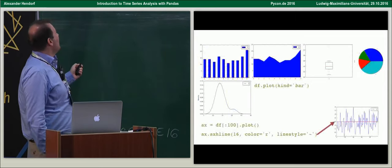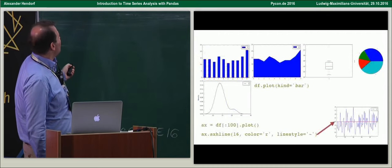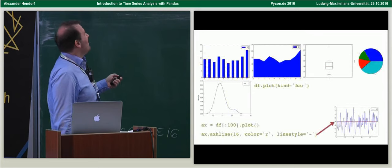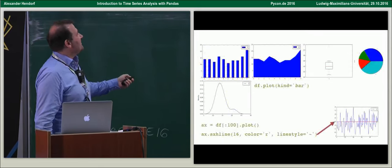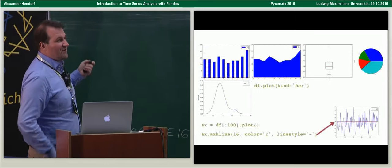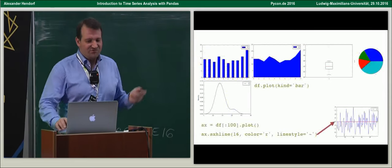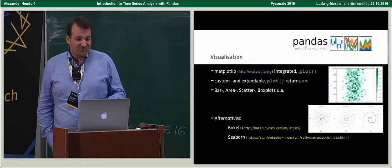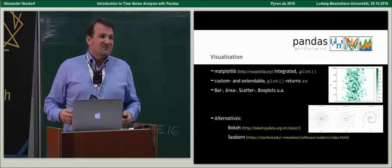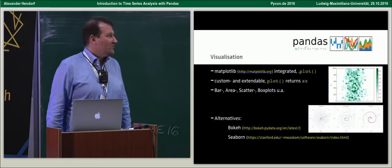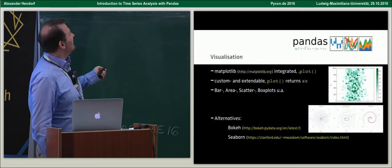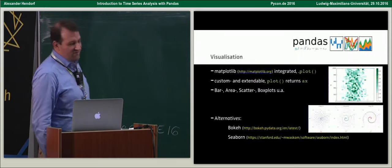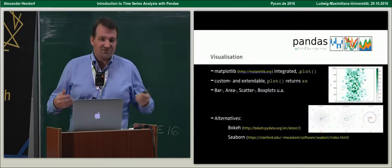Another nice thing is that plot() actually returns the axes object from matplotlib, so you can work with your plot further — for example, adding a line. I just guessed the average temperature and put a red line there. You can also use alternatives like Bokeh or Seaborn, which are a little bit more modern. It's not limited to matplotlib.